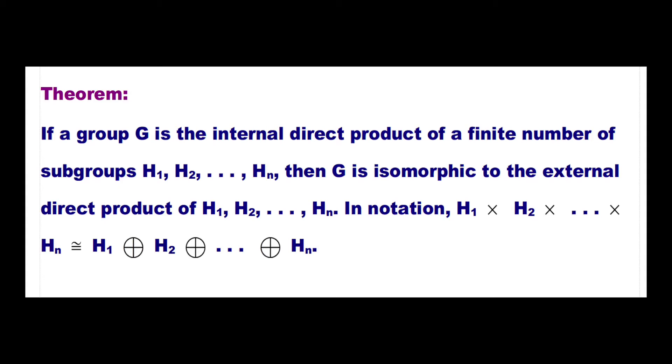In this module, we saw two direct products: the internal direct product and the external direct product. We saw various results related to these two direct products, and most importantly we found the condition under which the internal direct product and the external direct product are isomorphic to each other — namely, when they are subgroups of the given group. I hope this section was useful to you. Thank you.